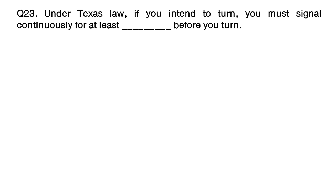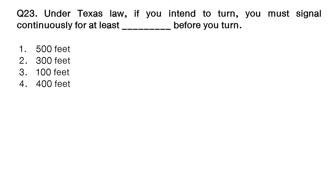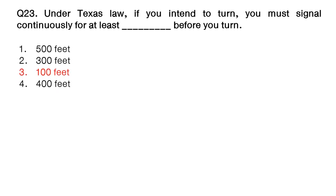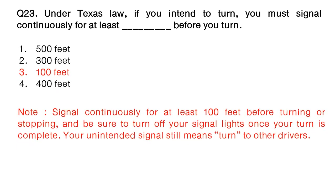Question: under Texas law, if you intend to turn, you must signal continuously for at least how many feet before you turn? Option number 1: 500 feet. Option number 2: 300 feet. Option number 3: 100 feet. Option number 4: 400 feet. The answer is option number 3: 100 feet. Note: signal continuously for at least 100 feet before turning or stopping, and be sure to turn off your signal lights once your turn is complete. Your unintended signal still means turn to other drivers.